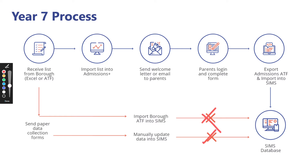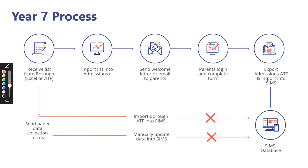Somebody at the school would manually key in all this information one by one into the database. With Admissions Plus, these steps are now a thing of the past. Once the school receives the local authority Excel file or ATF with their offers, they import it into Admissions Plus, send a welcome email to all parents, parents log in and complete the form online, and all information including core data is automatically exported and imported into the database.